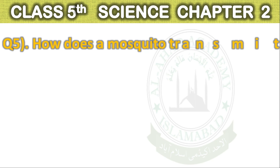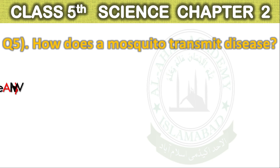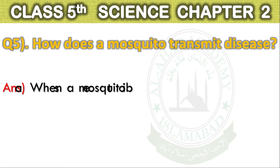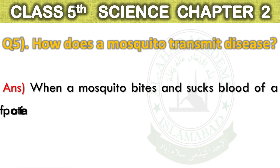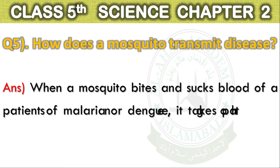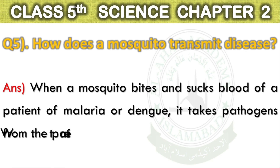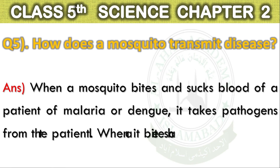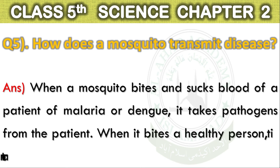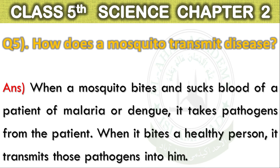Question No. 5: How does a mosquito transmit disease? Answer: When a mosquito bites and sucks the blood of a patient with malaria or dengue, it takes pathogens from that patient. When it then bites a healthy person, it transmits those pathogens into them.